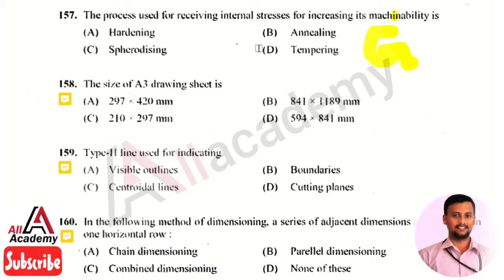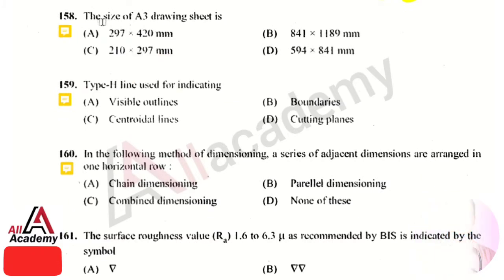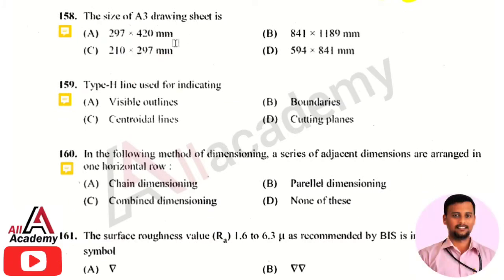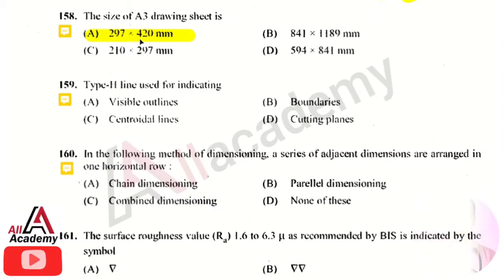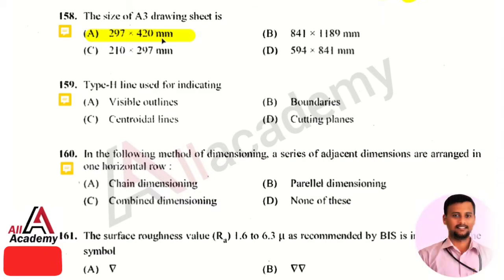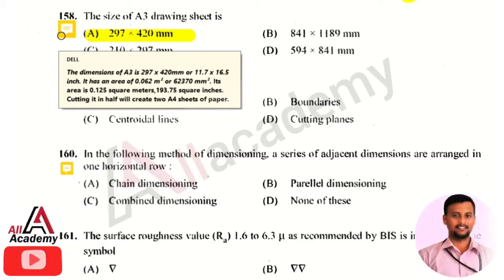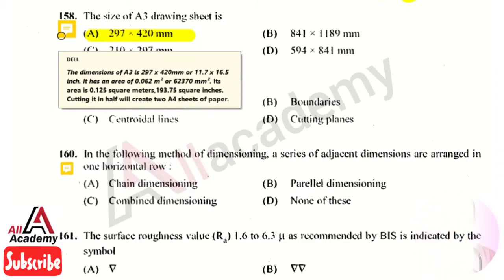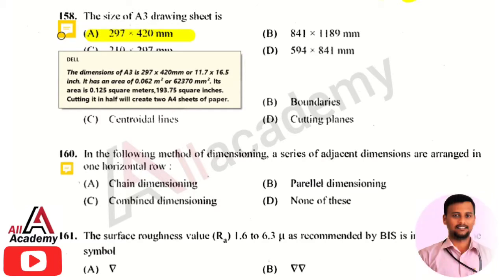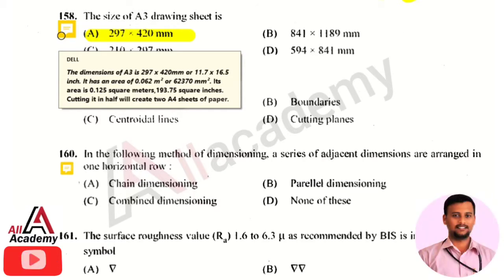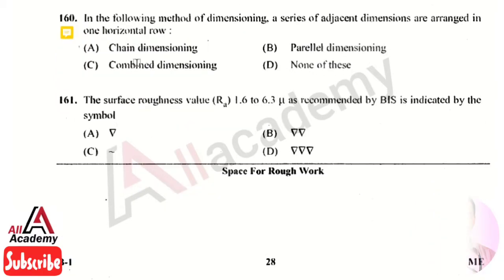The next question is: the size of an A3 drawing sheet is? The right answer is option 1, that is 297 × 420 mm. The dimension of an A3 size sheet is 297 × 420 mm, or in terms of inches it is 11.7 × 16.5 inches, and it has an area of 0.062 square meters.